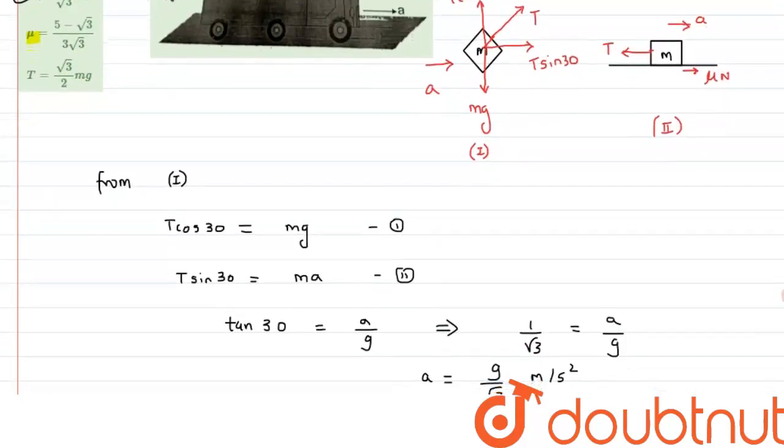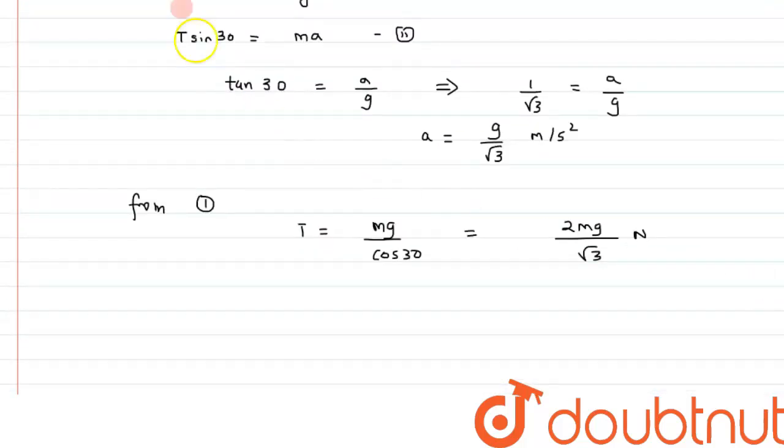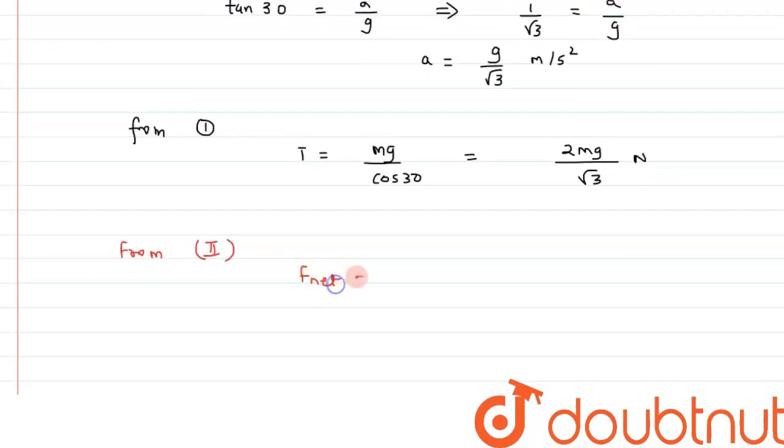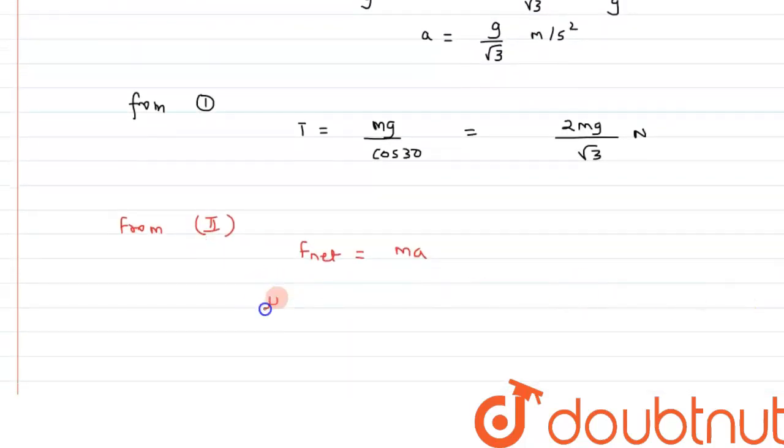Finally, we have to calculate the coefficient of friction. So we will consider figure 2 for that. So from figure 2, we can say, again we will apply F net equals to ma. So we can say F net would be nothing but it is mu N minus T or we can write mu mg minus T and that would be equals to ma. Since we know normal reaction is nothing but it is... so we can write since N is equals to mg.